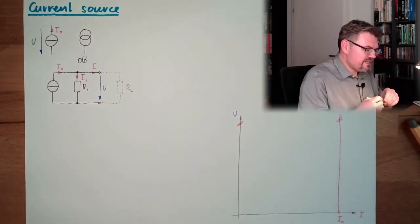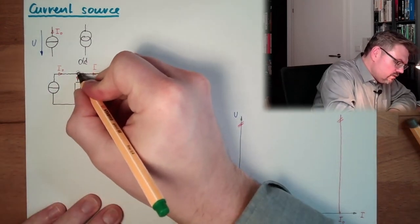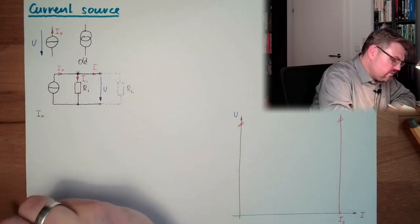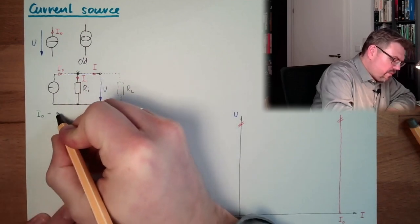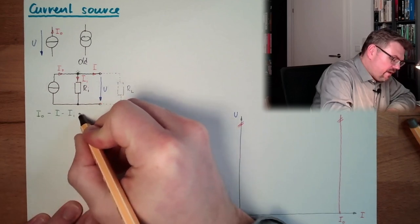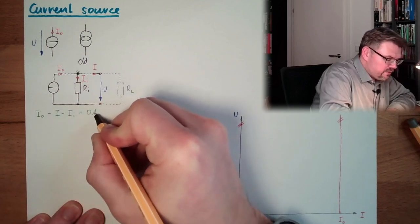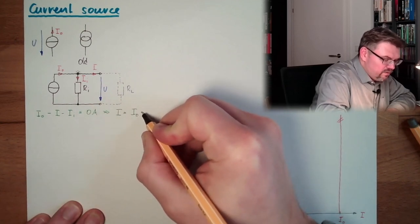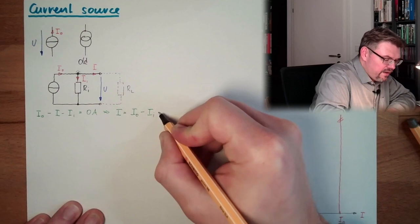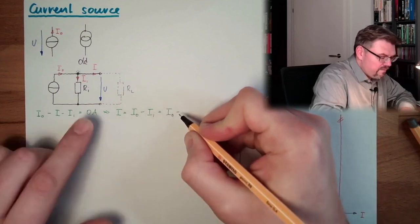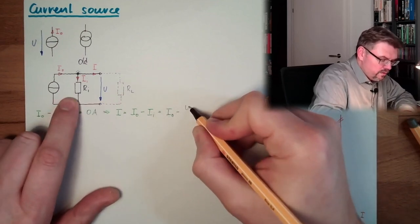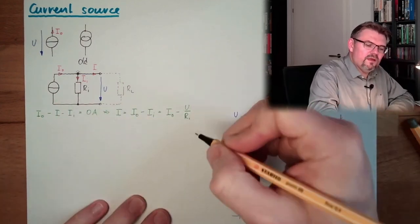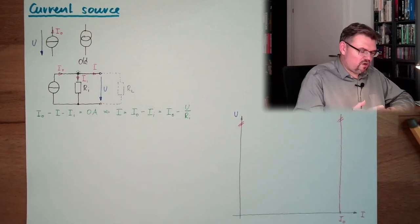Now, let's have a look here at this node. What does this mean? This means, what is going in? I0. What is coming out? Minus I, minus Ii. And this is zero amps. This means I equals I0 minus Ii. And this is I0 minus, and here, we have U here, U divided by Ri.